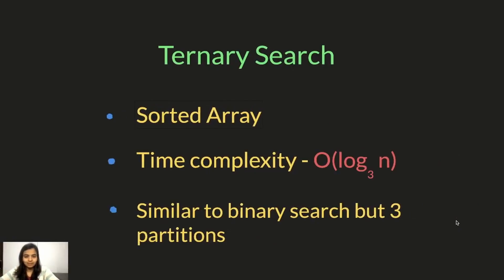Hello everyone, in today's video I'll be explaining ternary search. There are three things to remember: first, the array has to be in sorted order, otherwise ternary search will not work. Second, the time complexity is O(log base 3 of n), since we divide it into three parts. It's similar to binary search, but instead of dividing into two parts, we divide into three.